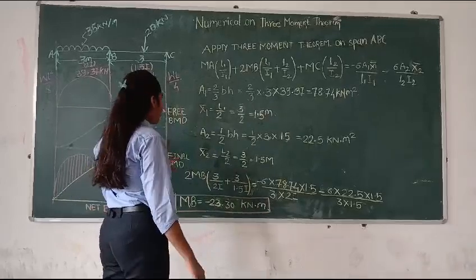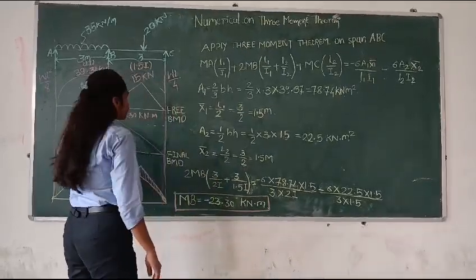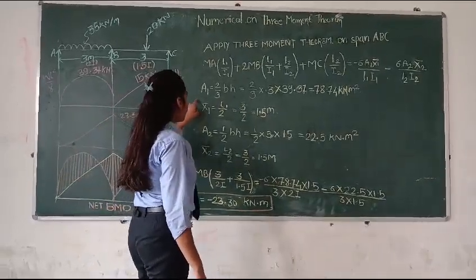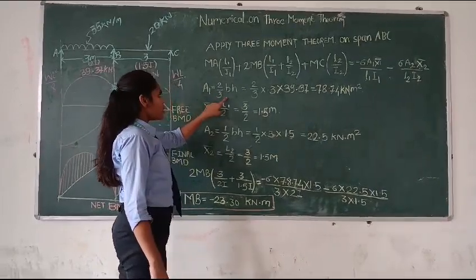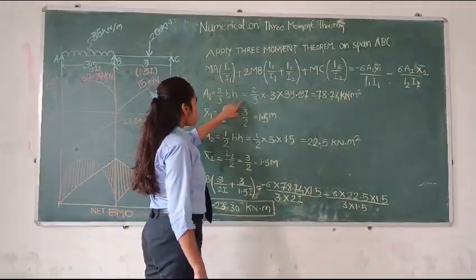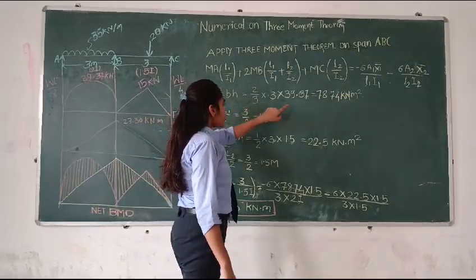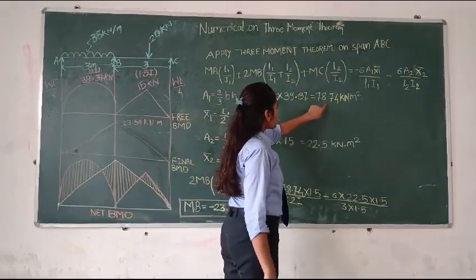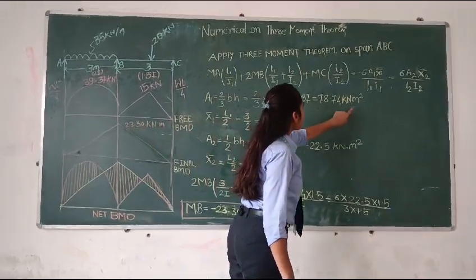Now we calculate area of integral 1. The formula is 2 by 3 into B into H. After putting the value of B into H, the answer is 78.74 kNm squared.